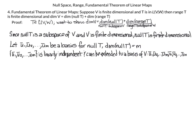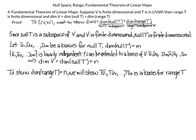When we extend the basis of null(T) with v1, v2, …, vn to get a basis for V, the dimension of V equals m plus n — m from the u-vectors spanning null(T) and n from the additional v-vectors. Our strategy is to show that the dimension of range(T) equals n, by showing that T(v1), T(v2), …, T(vn) is a basis for range(T).